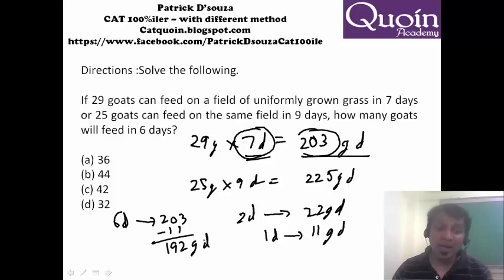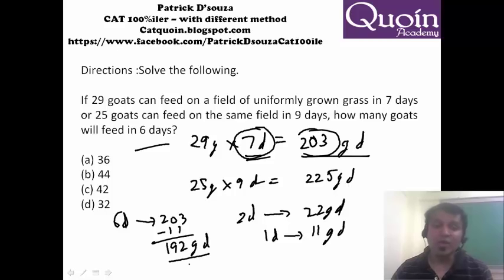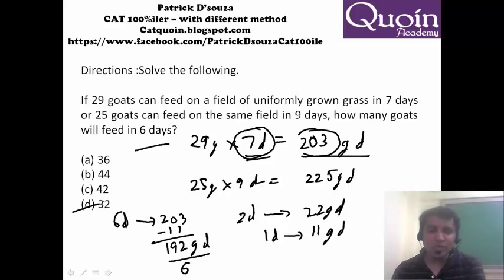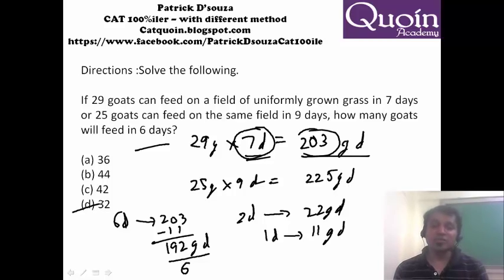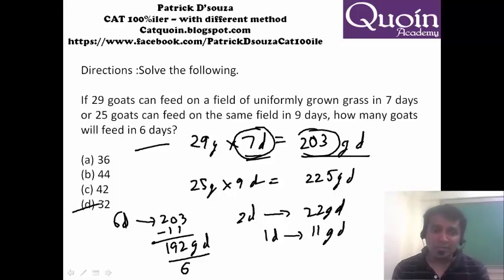Now, 192 goat-days has to be consumed in 6 days, which means 192 divided by 6 gives you the answer: 32. So you don't actually need to form an equation. You just have to understand the importance of what is given — that is uniformly grown grass. Try to find it and get the answer. If you form an equation, it will take more time and you may not even get the answer.